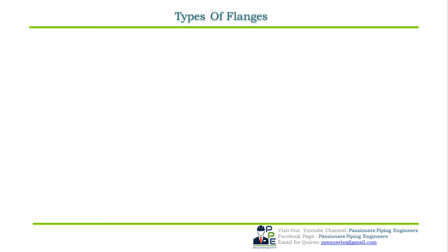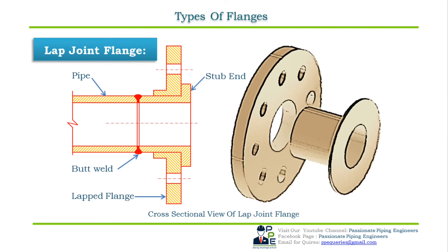The fifth type is the lap joint flange. The concept is similar to an overlap joint where two members overlap. Lap joint flanges — also known as backing flanges — slide directly over the pipe and are used with stub end fittings. They consist of two parts: first, a stub end which is directly butt welded to the pipe, and second, a loose backing flange which freely slides over the pipe and is bolted to the mating flange.